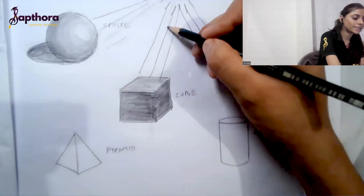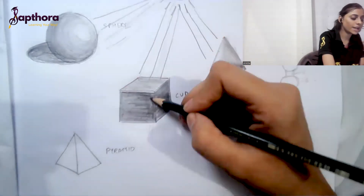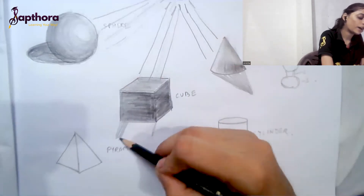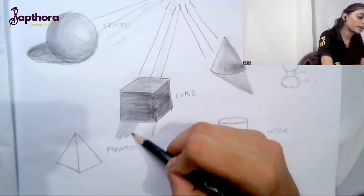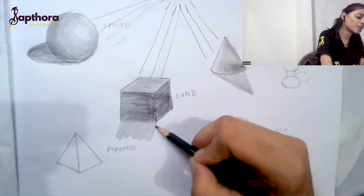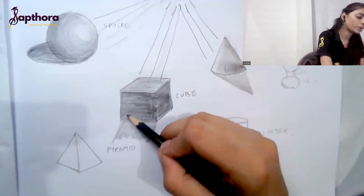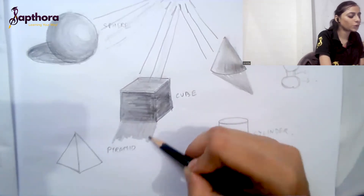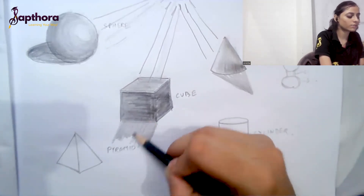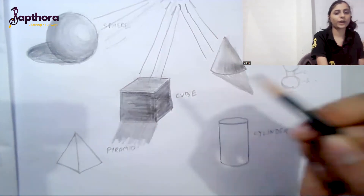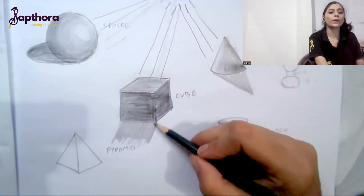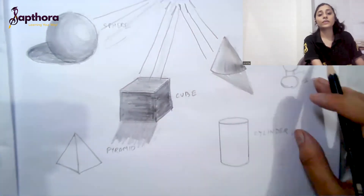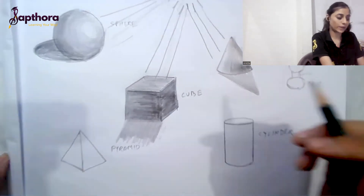The shadow for the cube will fall here because the light is coming from this side. I'm using a square shape for the shadow, because when you convert the 3D cube into a 2D shape, you get a square.